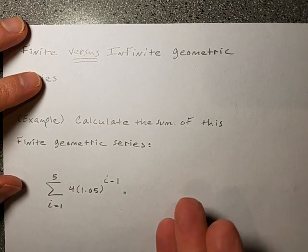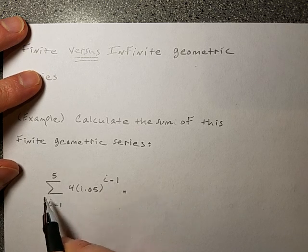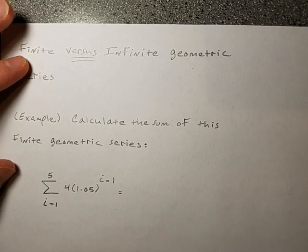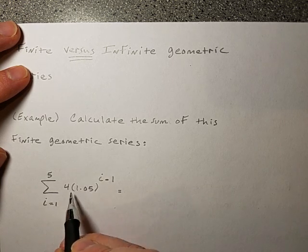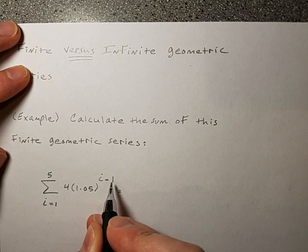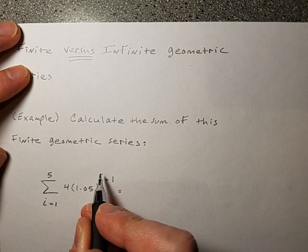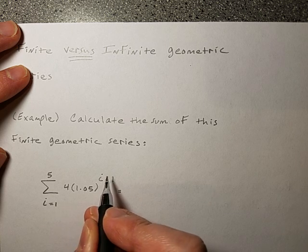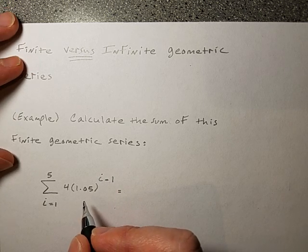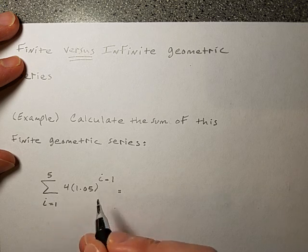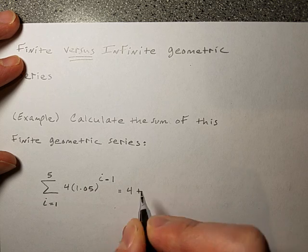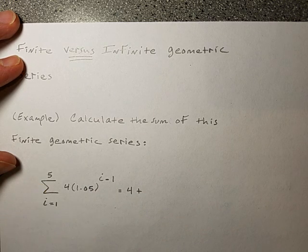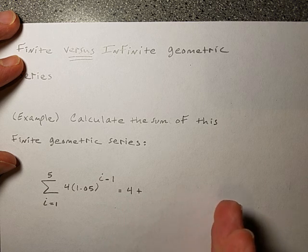So let's work through our summation notation and write it out and see what it looks like. There are going to be five terms. So first we start with one — we let I equal one in this formula. One minus one is zero, so the power is zero to start with. What's 1.05 to the power zero? That would be one. And what's four times one? That's just four. So the very first term is four. That's from I equals one. Then we count our way up to five, adding every individual result together.